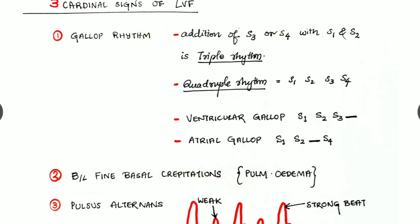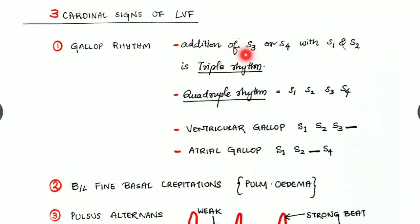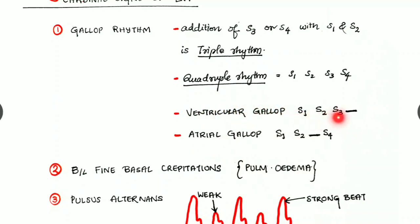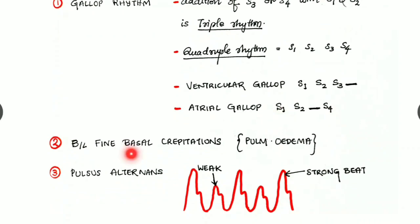Gallop rhythm is the addition of S3 or S4 with S1 and S2, giving a triple rhythm. There can also be a quadruple rhythm with S1, S2, S3, and S4. A ventricular gallop is S1-S2-S3; an atrial gallop is S1-S2-S4. Bilateral fine basal crepitations are due to pulmonary edema.